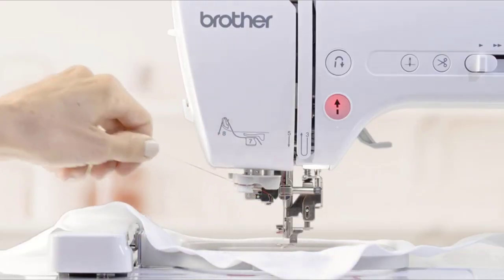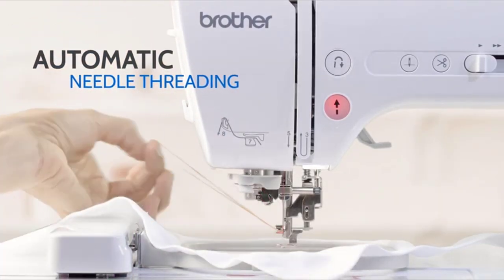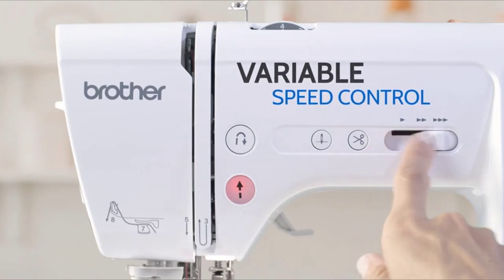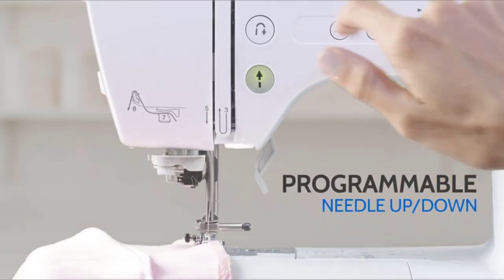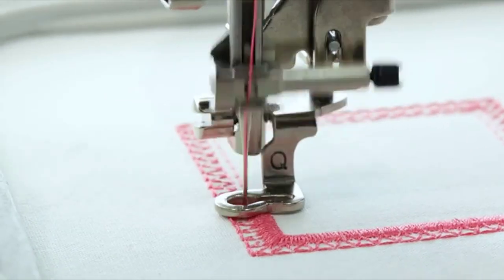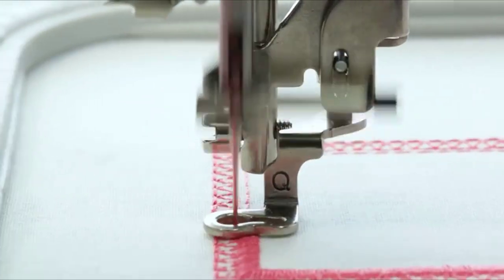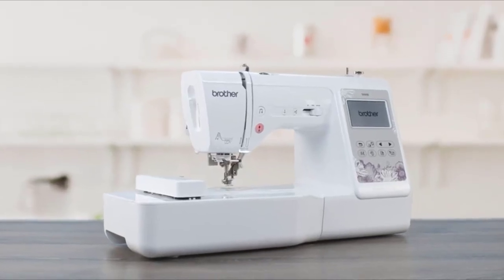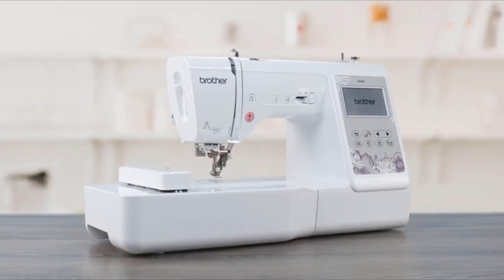plus advanced features like automatic needle threading, variable speed control, and programmable needle up-down. So bring your creative sewing and embroidery visions to life with the Brother SE600 2-in-1 Sewing and Embroidery Machine.